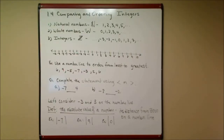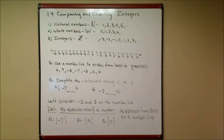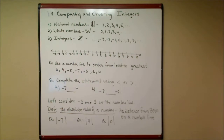We begin section 1.4, comparing and ordering integers, by talking about some sets of numbers you should already be familiar with. The first one is the natural numbers — the counting numbers: one, two, three, four, five. The symbol for natural numbers looks like a capital N with an extra slash through it. Then you add zero to the natural numbers and you get the whole numbers.